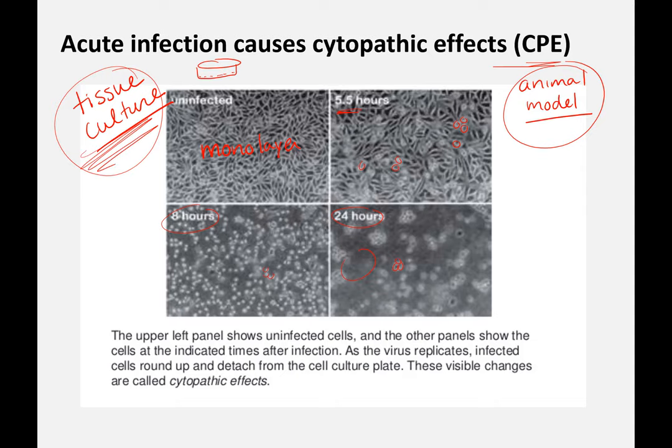With tissue culture, it's really artificial because there is no immune response — it's a single cell type. With an animal model, at least you can see a more realistic organismal reaction to a virus infection. Cytopathic effect basically means cell death.